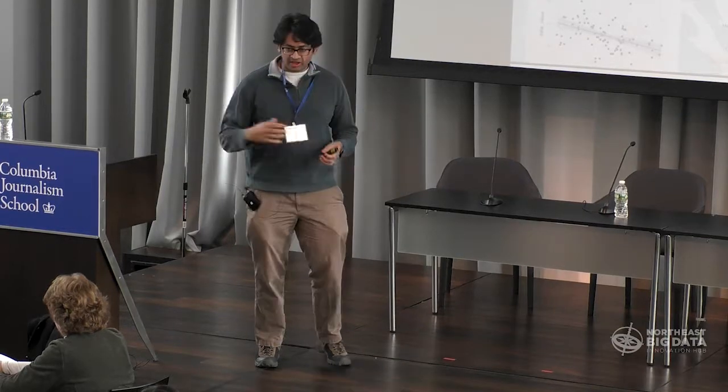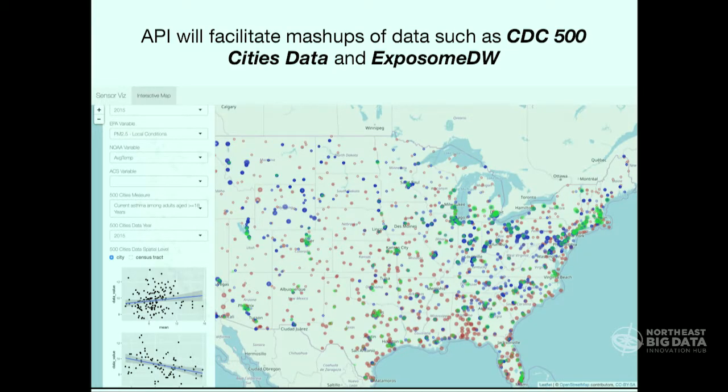Another question about the map that was shown earlier with different colored dots: the colors represent different types of data. There are different types of sensors — some are EPA sensors, some are for NOAA. And then there are also locations for the 500 Cities. So they're basically three different data sets mashed up together, representing the different sensors associated with all of them. Thank you.